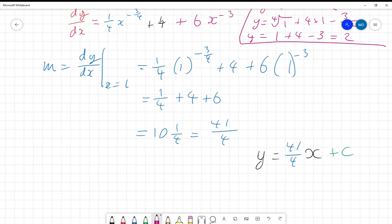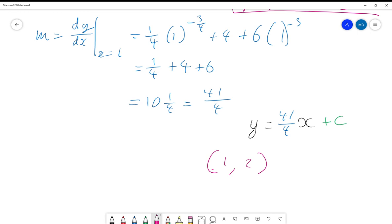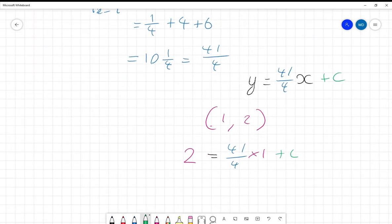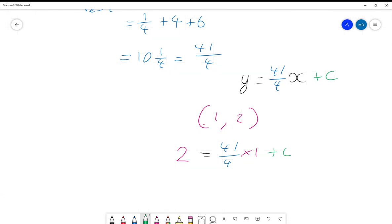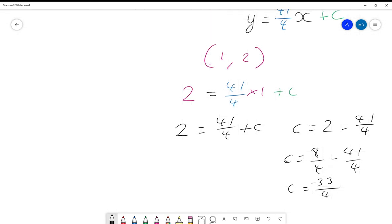And so our coordinates we have to plug in is x equals 1 and y equals 2. So we'll plug that in. And we'll get 2 is equal to 41 over 4 times 1 plus c, which then gives us 2 is equal to 41 over 4 plus c. And so c is equal to 2 minus 41 over 4, which means c is equal to 8 over 4 minus 41 over 4, so c equals negative 33 over 4.